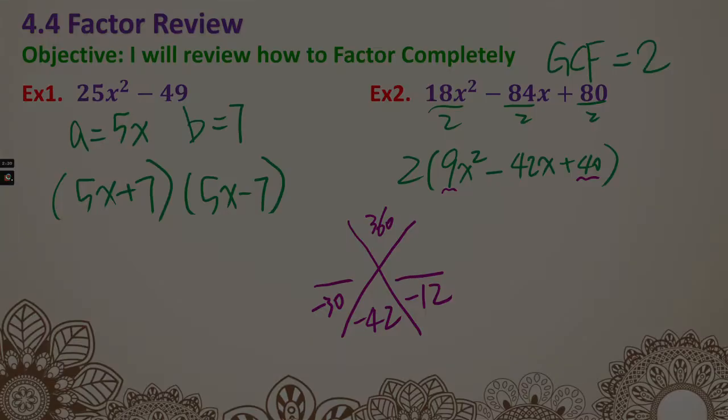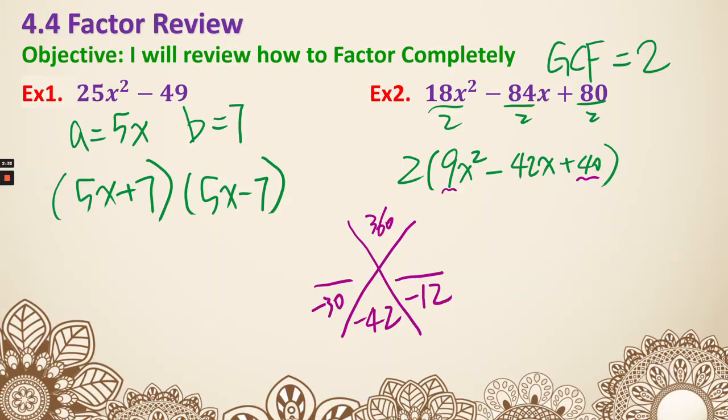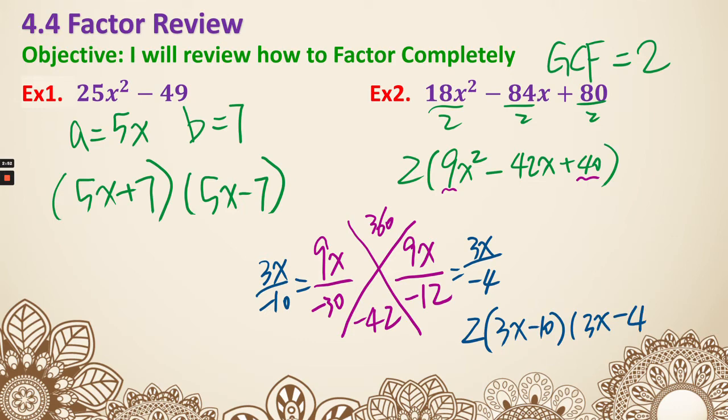The combination we need is negative 30 and negative 12. We're going to put 9x on the top. I'm going to simplify each fraction, so that's going to be 3x over negative 10. So our final answer is 2 on the outside, then 3x minus 10 and 3x minus 4. That is example 2.